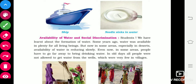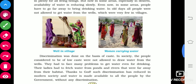Next topic: availability of water and social discrimination. 'Availability' means how water is available, and 'social discrimination' refers to how water access was historically unequal. In some areas, water is scarce and people had to travel very far. In the old days in villages, not everyone was allowed access to water sources. High-caste people had permission to use wells, while lower-caste people were not allowed to fetch water — this was discrimination.